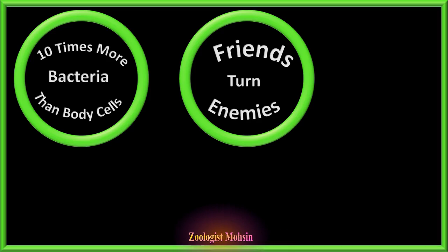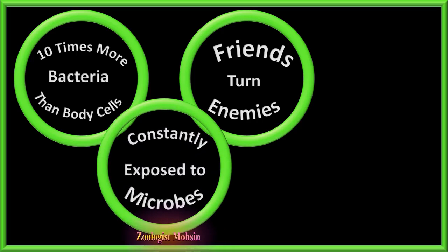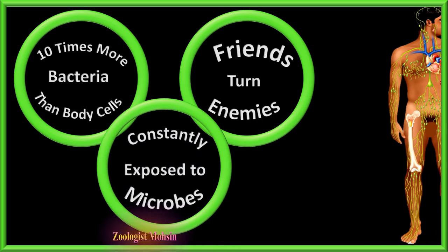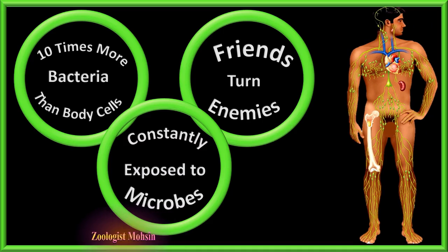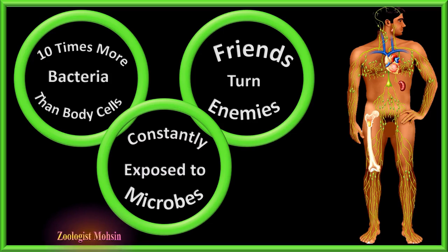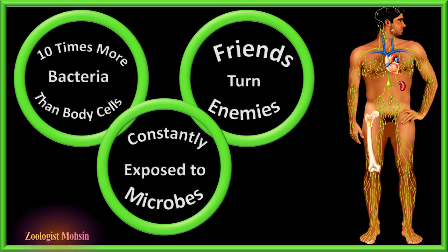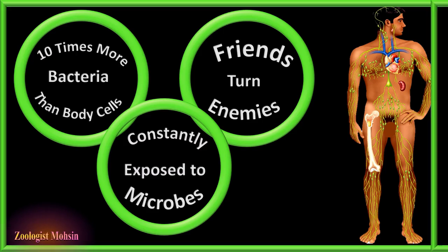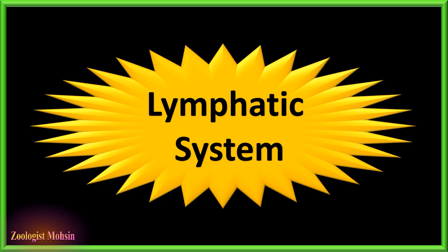Moreover, we are constantly exposed to external microbes through food, water, air, and touch. So to deal with these dangers we must have a mechanism of check and balance to get rid of these enemies, as well as protection for the future. The system which does all this in our bodies is the lymphatic system.